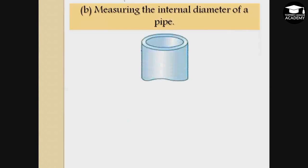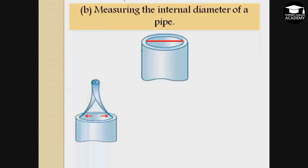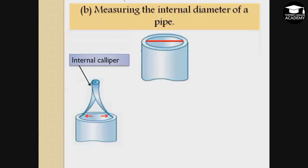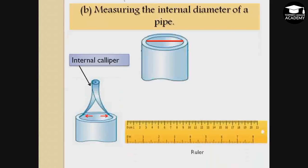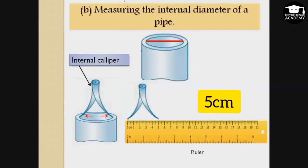To measure the internal diameter of a cylindrical pipe, we use an internal caliper. The internal caliper is placed in the inner portion of the pipe, and a ruler is used to record the measurement. Here the internal diameter of the pipe is 5 centimeters.